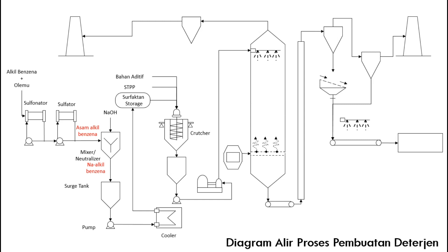Campuran kemudian dialirkan menuju ke drop tank, untuk kemudian dipompakan menggunakan high pressure pump menuju ke bagian atas high spray tower. Pada bagian atas menara, campuran disemprotkan, sedangkan pada bagian bawah dialirkan udara panas yang dihasilkan dari furnis. Dari proses ini didapatkan butiran deterjen yang kemudian jatuh ke bagian bawah menara.